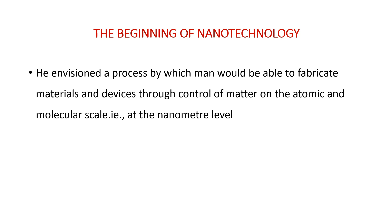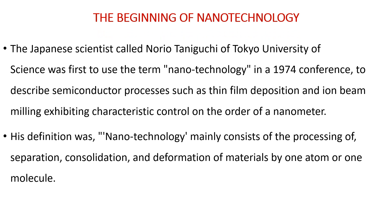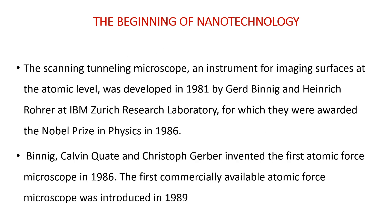Feynman envisioned a process by which man would be able to fabricate materials and devices through control of matter on the atomic and molecular scale, that is, at the nanometer level. The Japanese scientist Norio Taniguchi of Tokyo University of Science was first to use the term nanotechnology in a 1974 conference to describe semiconductor processes such as thin film deposition and ion beam machining, exhibiting characteristic control on the order of a nanometer. His definition was that nanotechnology mainly consists of the process of separation, consolidation, and deformation of materials by one atom or one molecule.